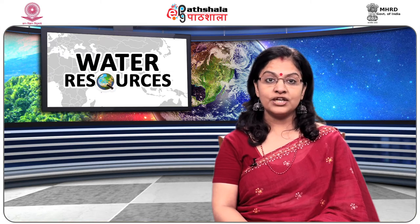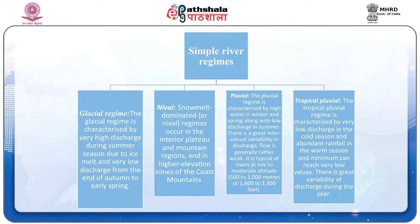The pluvial regime is characterized by high water in winter and spring along with low discharge in summer, with greater inter-annual variability. It is typical of rivers at low to moderate altitudes (500 to 1,000 meters, or 1,600 to 3,300 feet). The tropical pluvial regime is characterized by low discharge in the cold season, abundant rainfall in warm seasons, and minimum flows that can reach very low values, with great variability of discharge during the year.